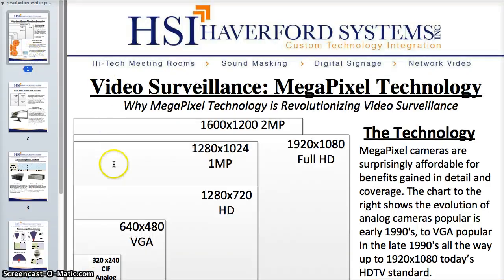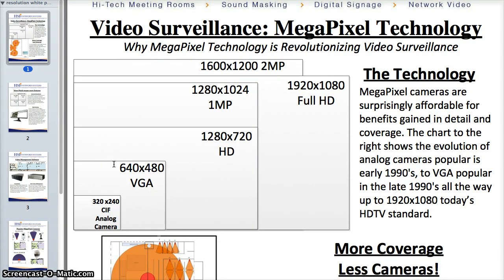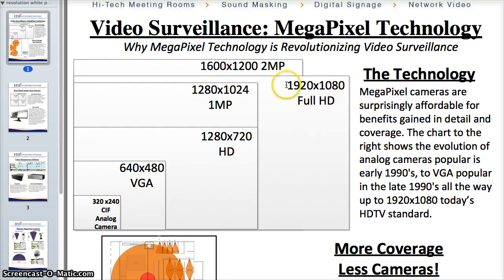Let's start with the actual pixels. Megapixel technology refers to any camera that has one or more megapixels of information being put on the sensors. Traditionally, an analog camera in the early to maybe even late 90s was only 320 by 240 pixels per camera. This is an actual representation of a 1920 by 1080p full HD LCD resolution size.